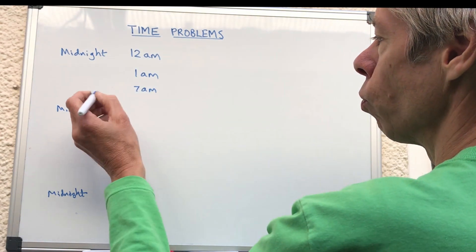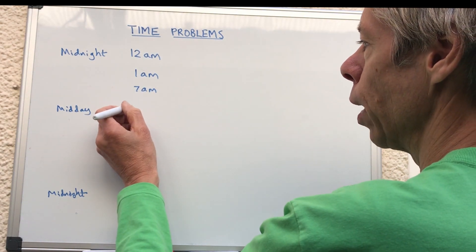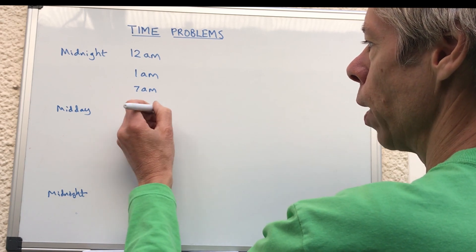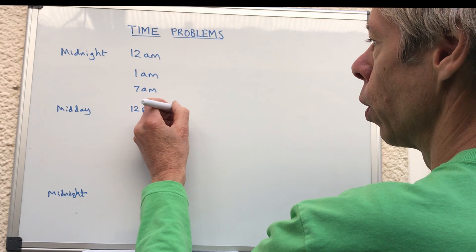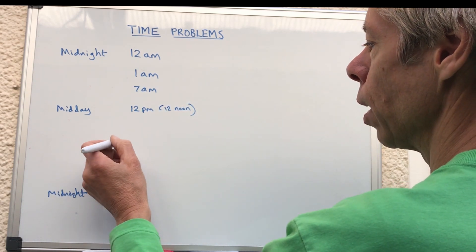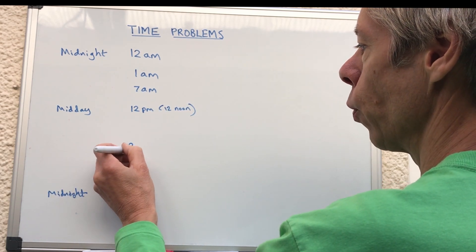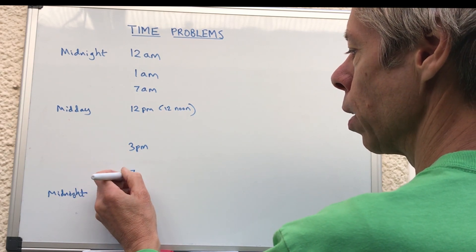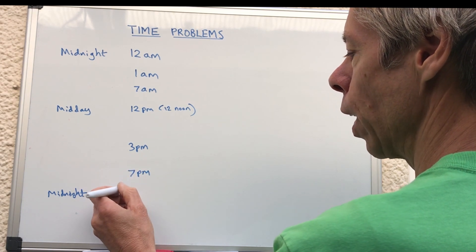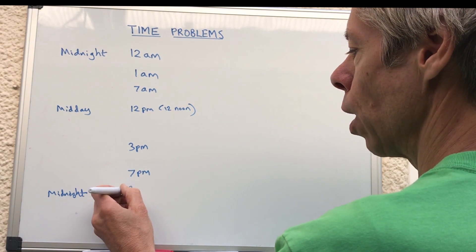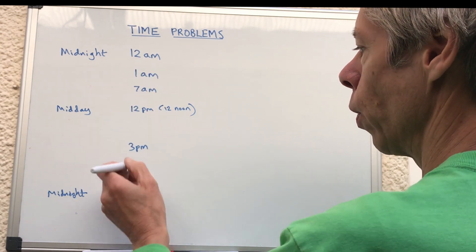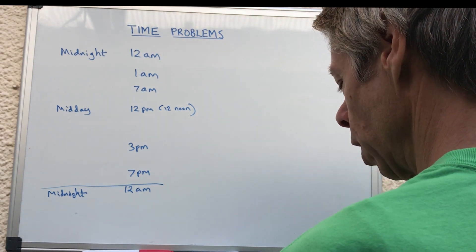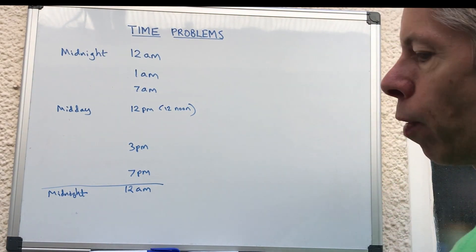Just before midday it would be approaching 12, then midday itself is 12 p.m. officially, or 12 noon. In the afternoon you could have 3 p.m., in the evening 7 p.m., and then midnight is 12 a.m. again — that's really the next day, it's like a cutoff point, so 12 a.m. is when the new day starts.